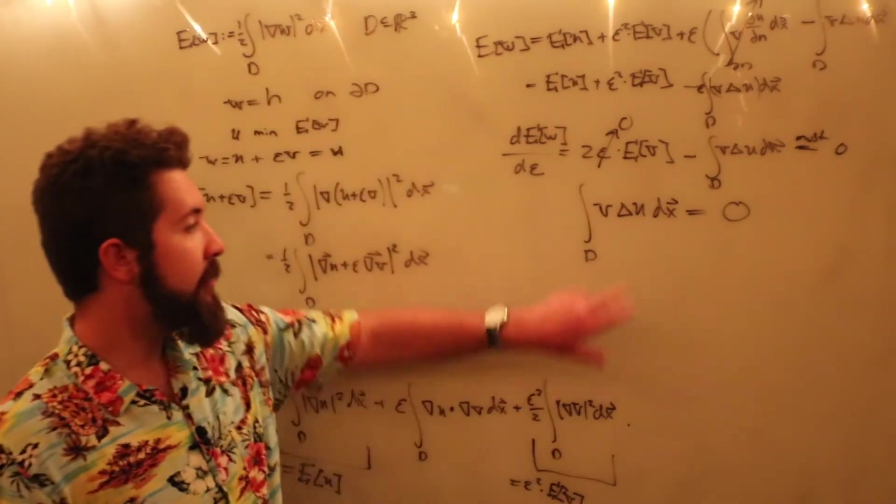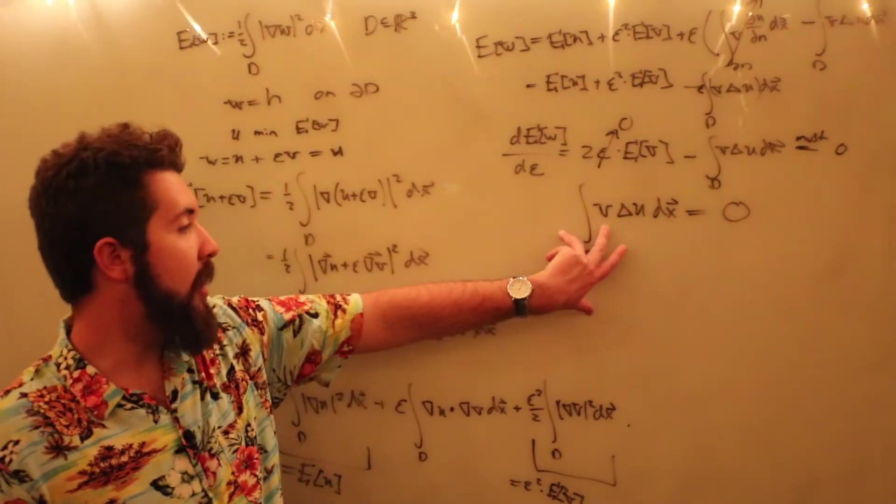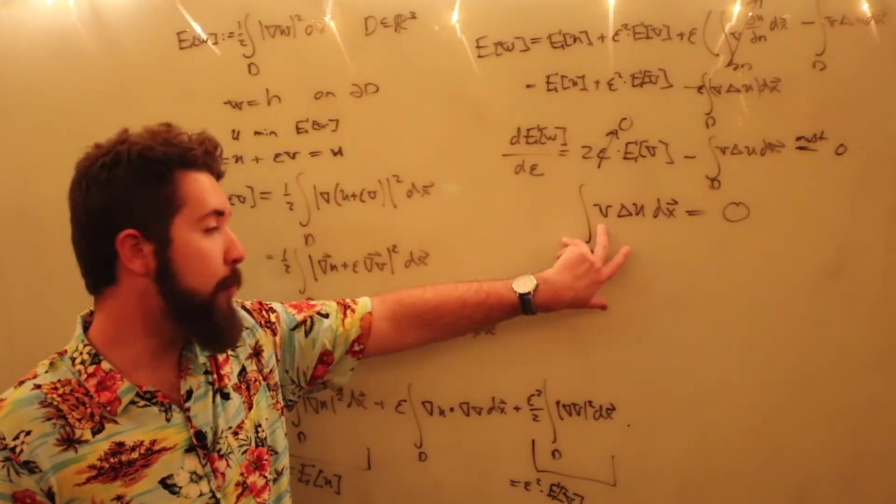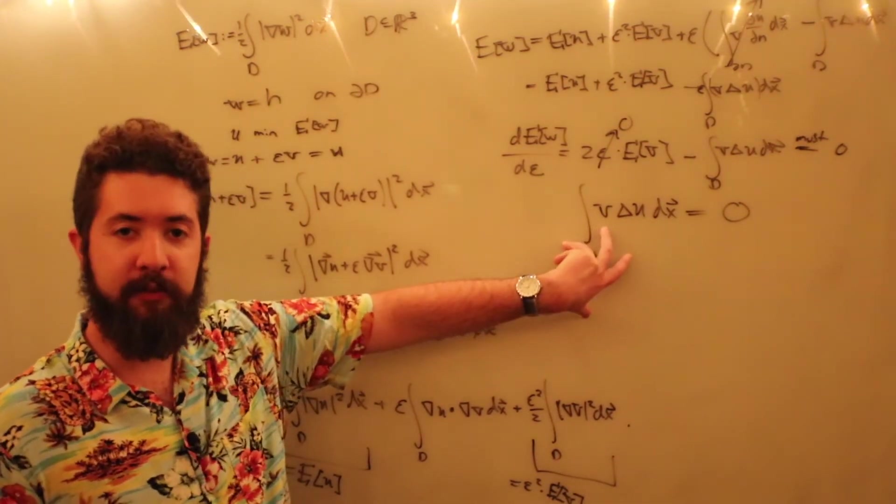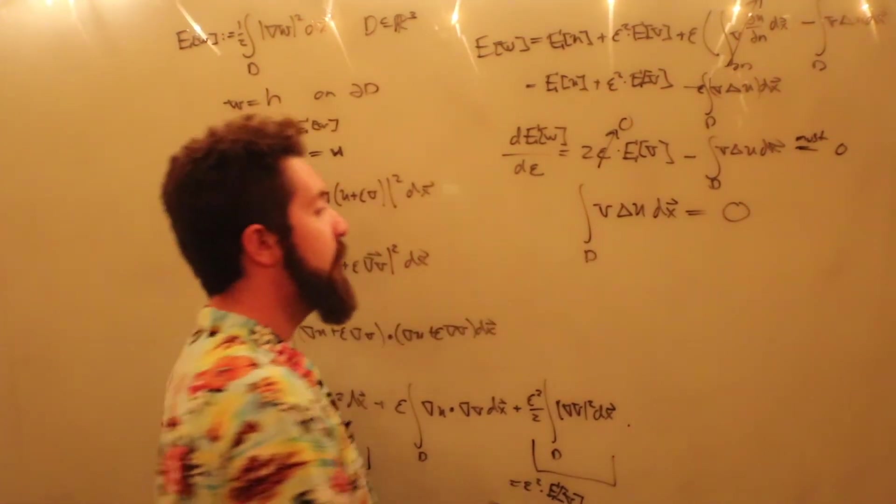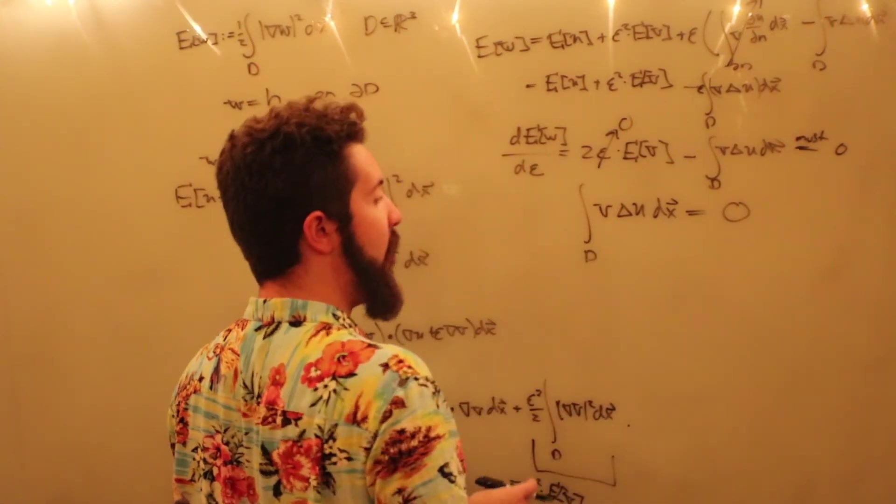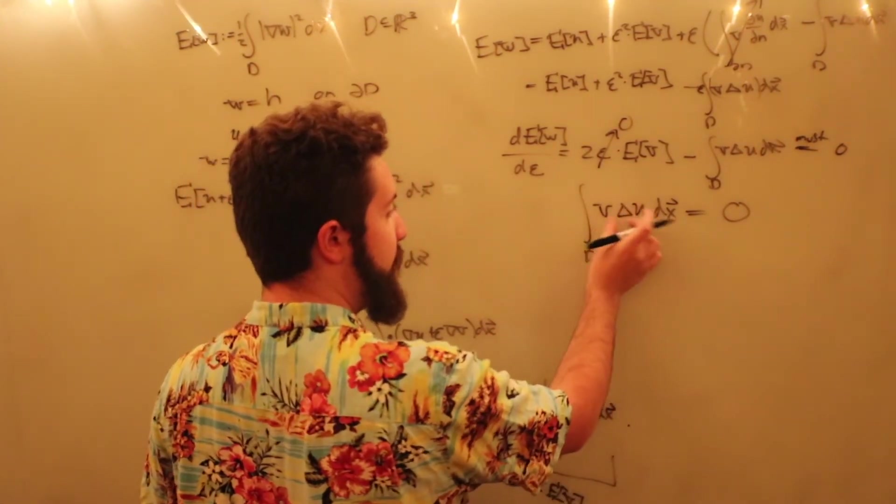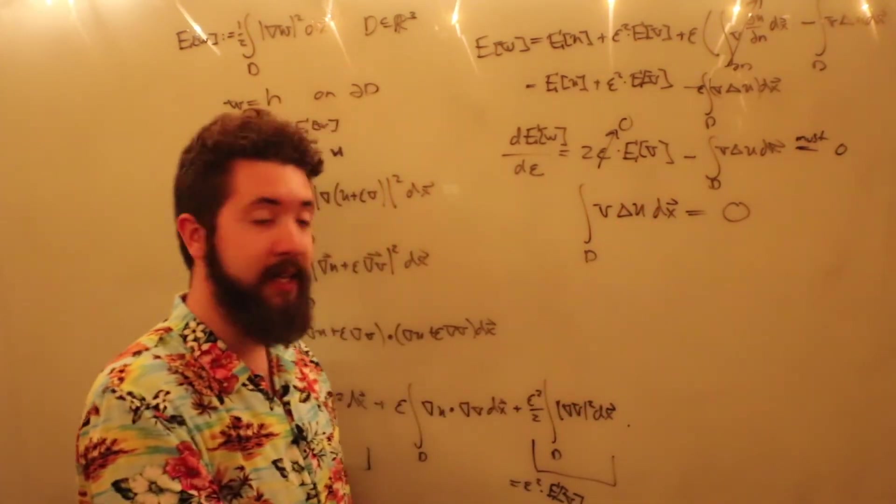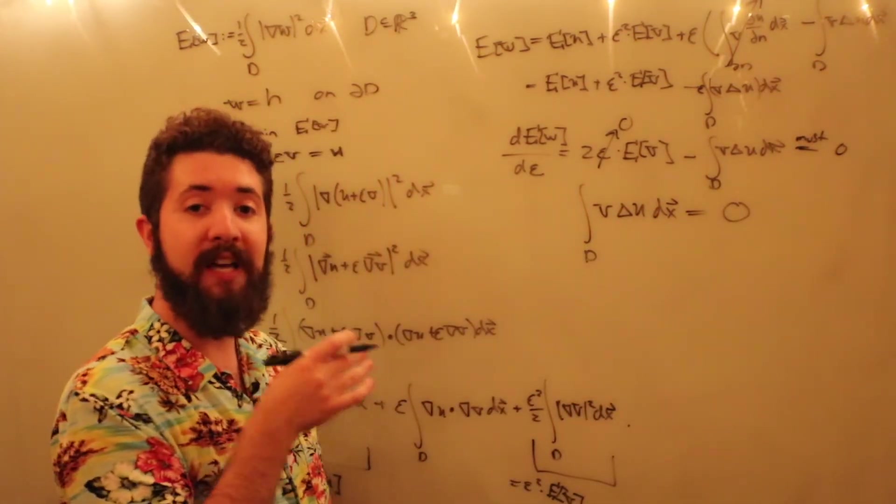Now, the thing is, v is zero on the boundary, but it is arbitrary inside the region d. So that you can show that because v is still arbitrary, this must imply that the thing multiplying it in the integrand is identically zero.